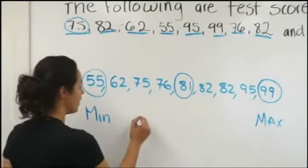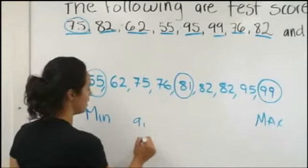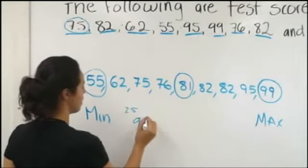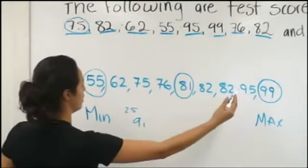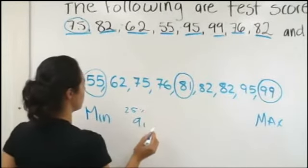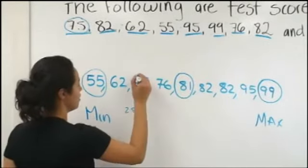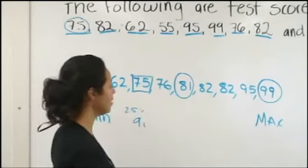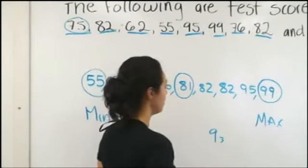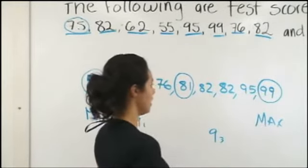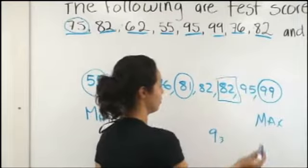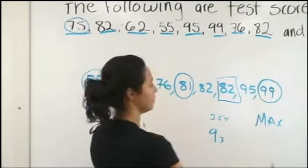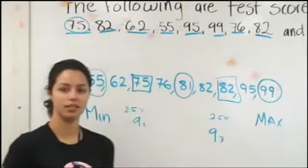To find quartile one, which represents the 25th percentile of these test scores, it is 75. Quartile three is 82, which represents the 75th percentile of these test scores.